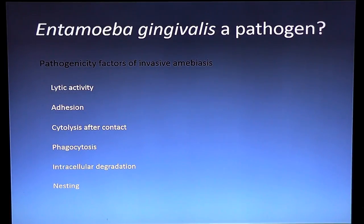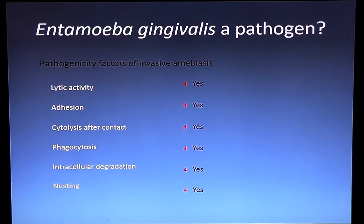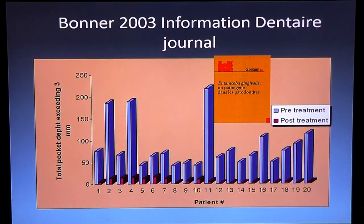Does Entamoeba gingivalis qualify as a pathogen? The factors required to be a pathogen are: lytic activity, ability to adhere to cells, cytolysis after contact, phagocytosis, intracellular degradation, and the ability to nest and be persistently present. All those conditions are met with Entamoeba gingivalis. It has all the pathogenicity factors to be an invasive amoebic disease of the sulcus. We published this in 2003 in the French journal Information Dentaire — 20 patients, almost all cured, no more pockets. The mean result was 94% pocket closure at that time.